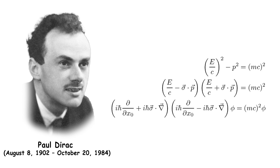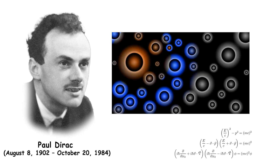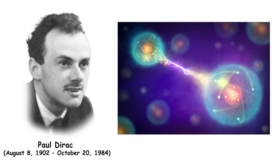Paul Dirac was a British theoretical physicist and mathematician known for his contributions to quantum mechanics and quantum electrodynamics. He formulated the Dirac equation, which describes the behavior of fermions and predicted the existence of antimatter. Dirac's work has had a profound impact on both physics and mathematics.